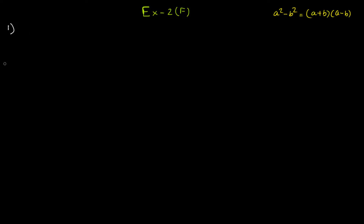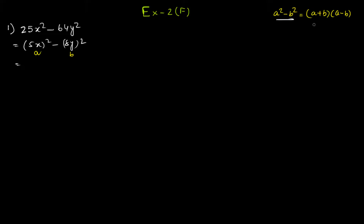The first question is 25x² - 64y². This can be written as (5x)² - (8y)², which is in the form a² - b². Here, a = 5x and b = 8y. Applying the formula gives the final factorization: (5x + 8y)(5x - 8y).